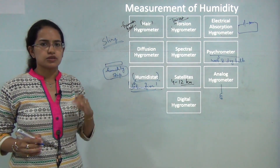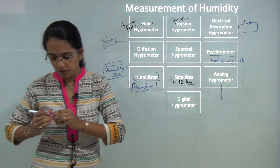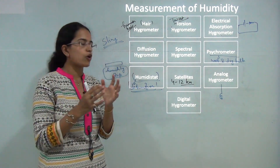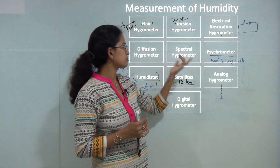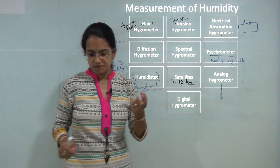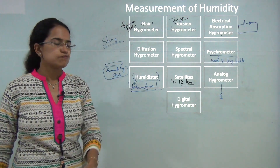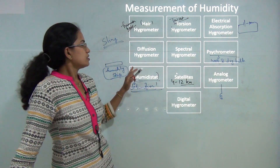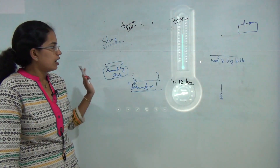The diffusion hygrometer works by diffusion of water between a porous membrane, and that diffusion helps analyze the amount of humidity in the atmosphere. The spectral hygrometer measures the absorption of water vapor in the spectral band. These are the various instruments used for measurement of humidity.